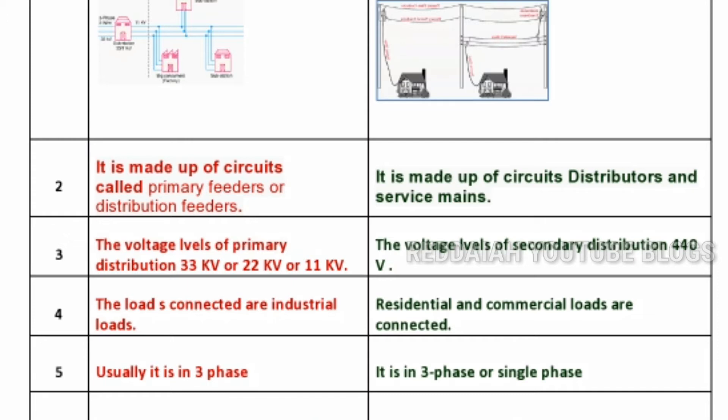The loads connected to the primary distribution system are industrial loads — 33 kV feeders go directly to industries. The loads connected to the secondary distribution system are residential and commercial loads.